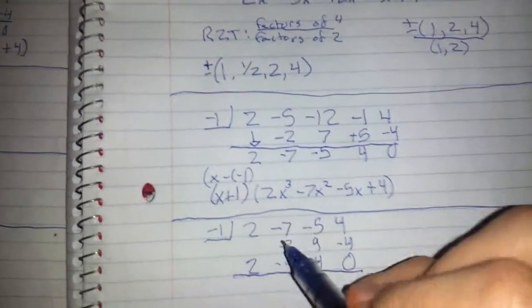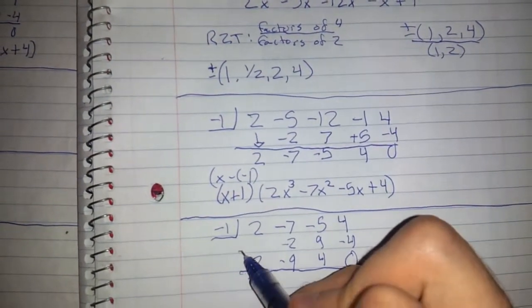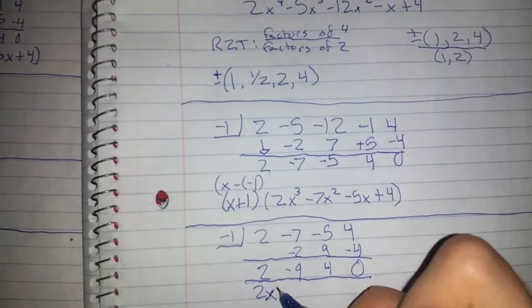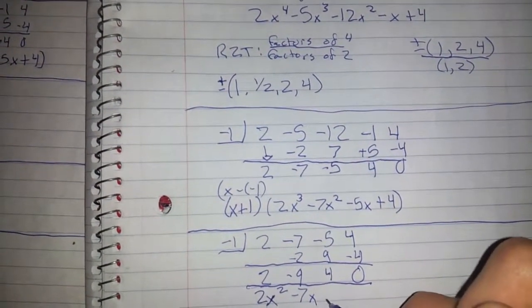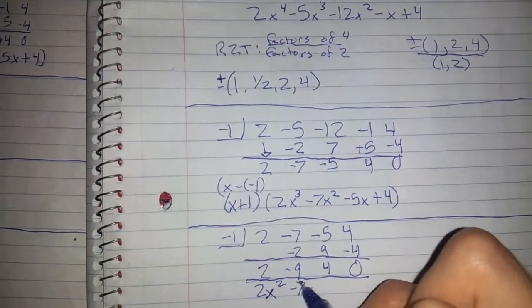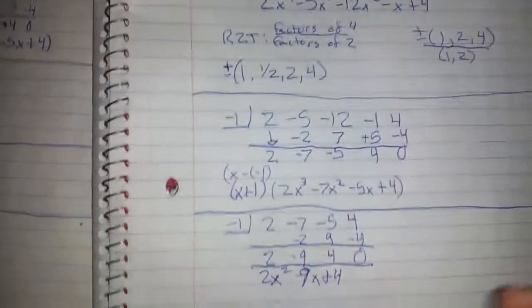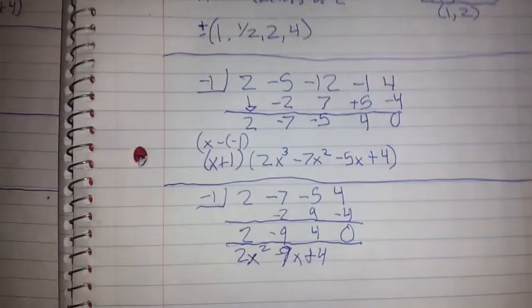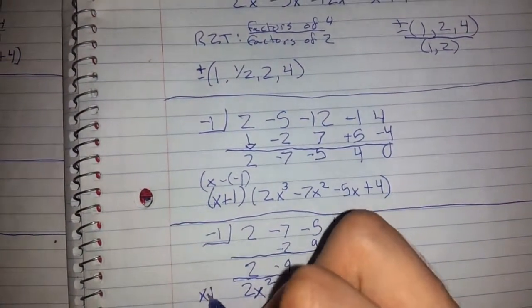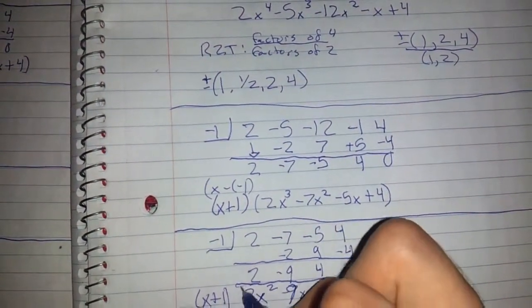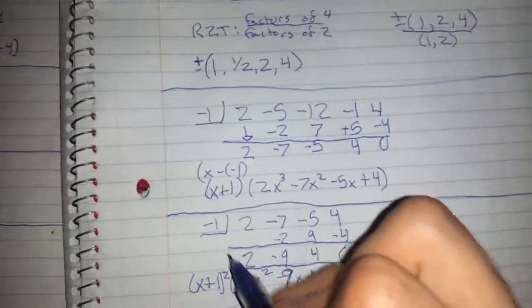This is going to drop down another multiplicity to 2x squared minus 9x plus 4. This means that x plus 1, this is the x plus 1 from the previous one. And we're just going to square that because now we have x minus 1 as another factor.